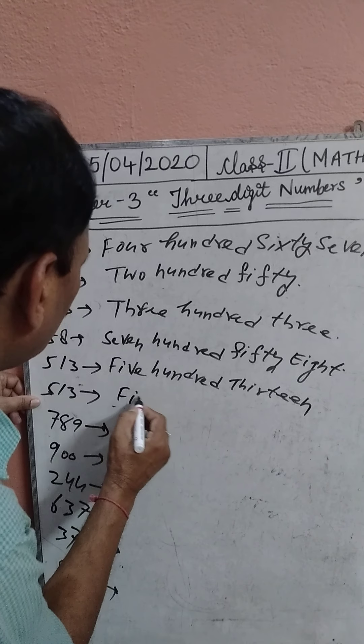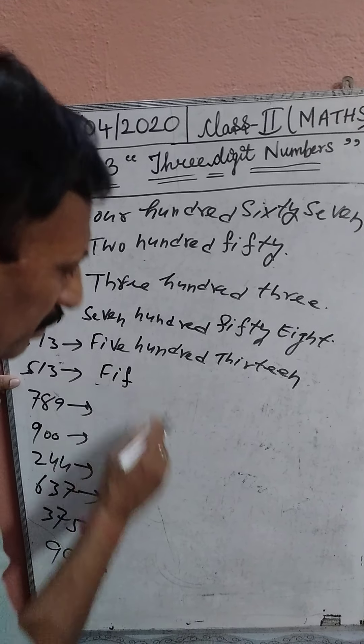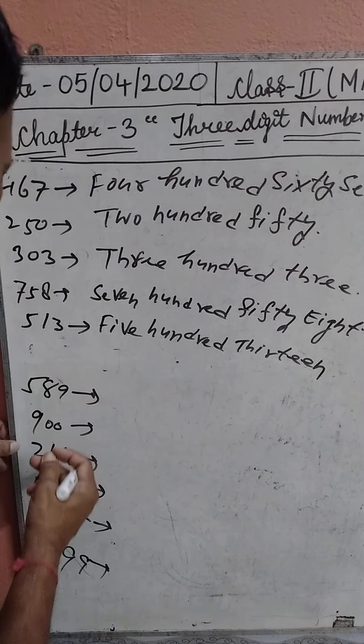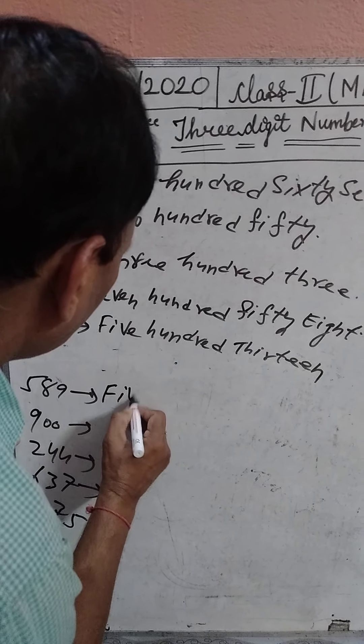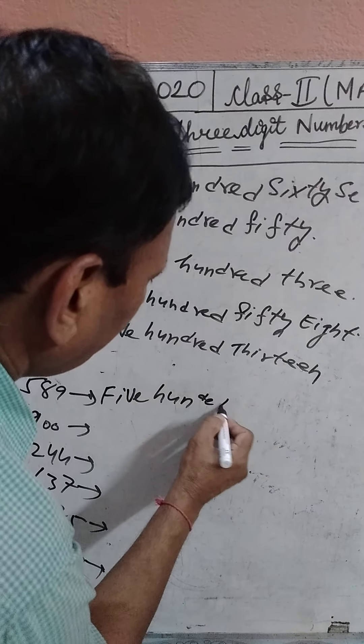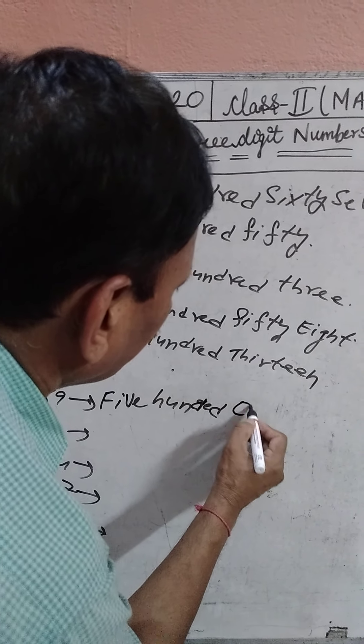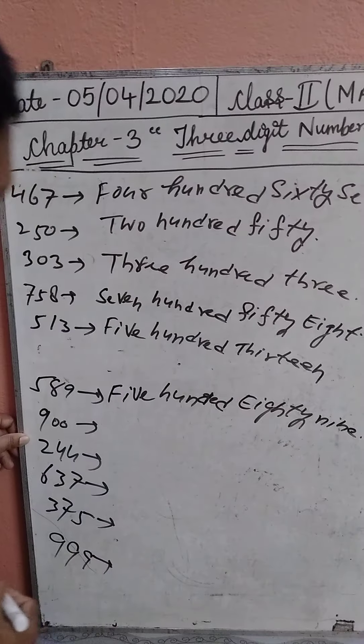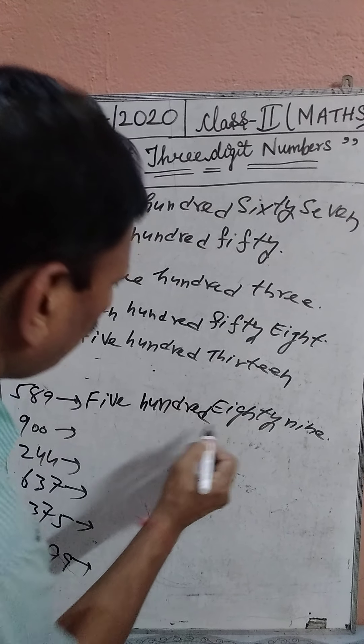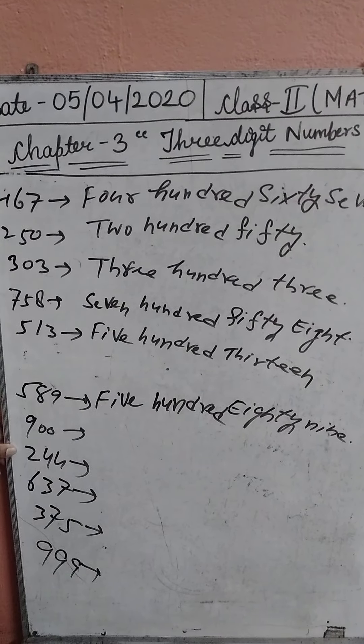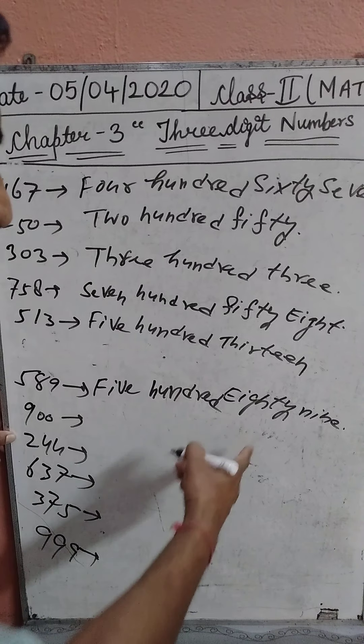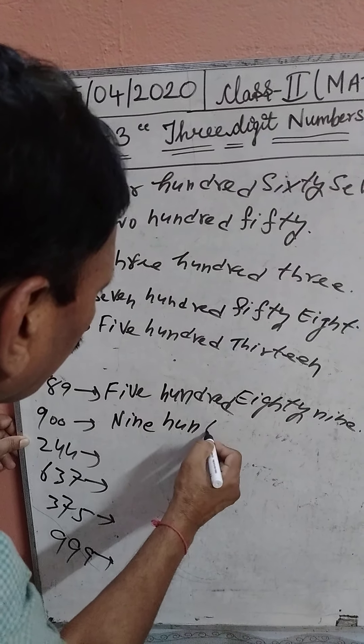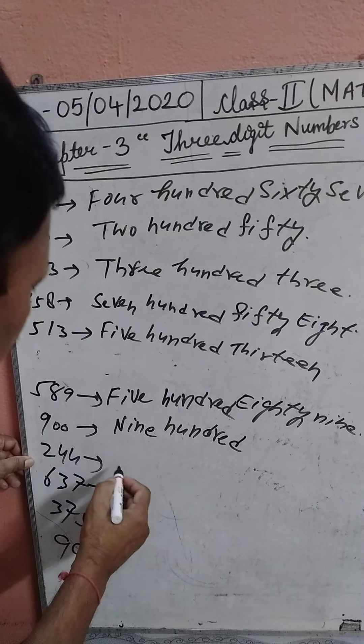589: five hundred eighty-nine. Next, 900: nine hundred. Next, 240: two hundred forty.